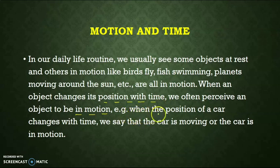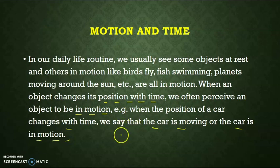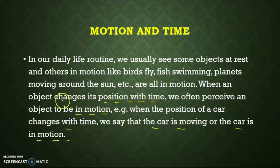For example, when the position of the car changes with time, we say that the car is moving or the car is in motion. If the car remains stationary throughout the day in a garage, we say the car is at rest. So the main cause of motion of any object is the change in position of the object with respect to time.